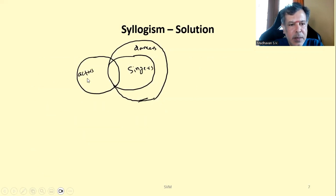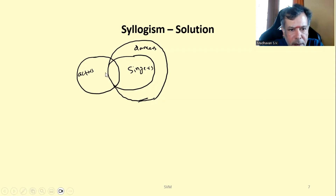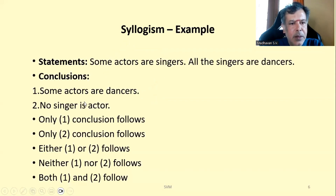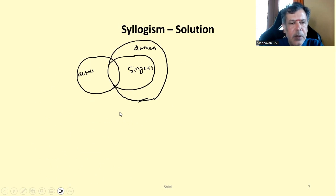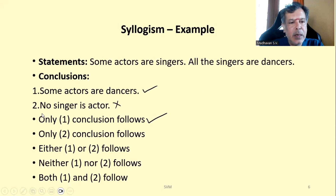From the diagram, 'Some actors are dancers' is true. For 'No singer is actor' — since the singer circle is cutting into the actor circle in the diagram, that means no actor is a singer is wrong. So conclusion 1 — some actors are dancers — follows, and conclusion 2 — no singer is actor — does not follow. That will be the result for this particular example.